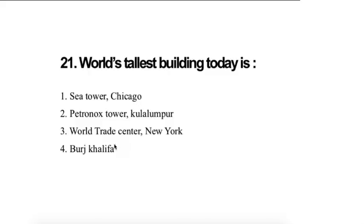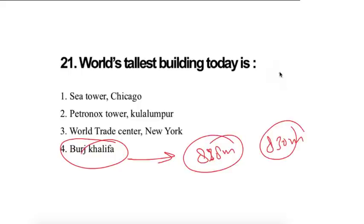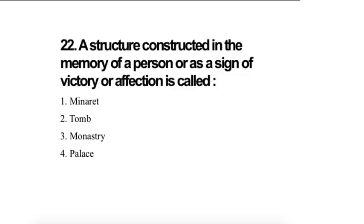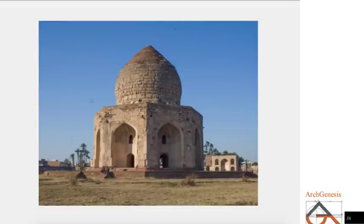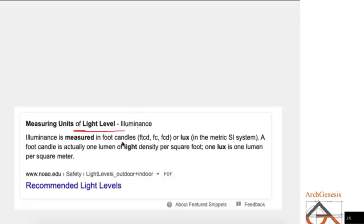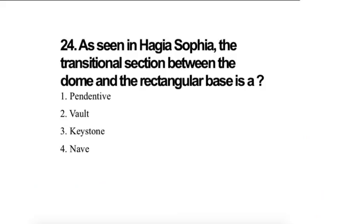World's tallest building today is Burj Khalifa and its height is 828 meter or 830 meter. The building look like this, so there is a pole. If you are counting the pole it will become 830 meter or if you're talking about the main structure, it is 828 meter. A structure constructed in the memory of a person or a sign of victory. Victory ke liye tomb nahi banate hain. Illumination levels are measured in lux.